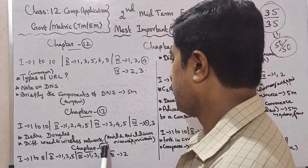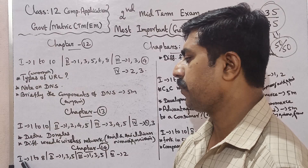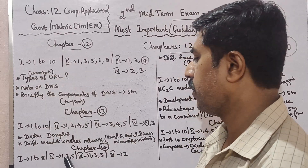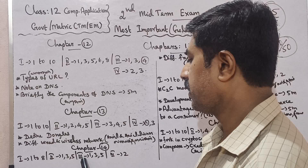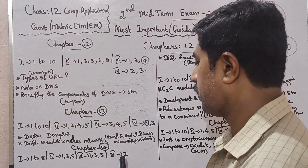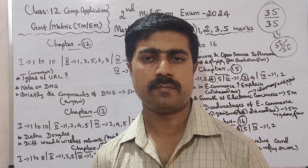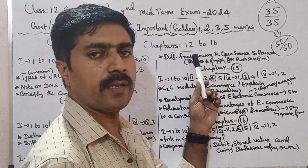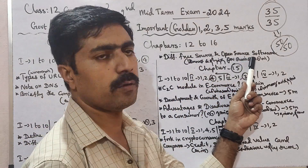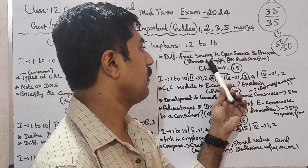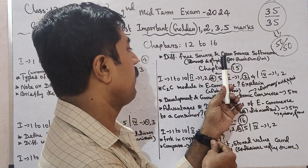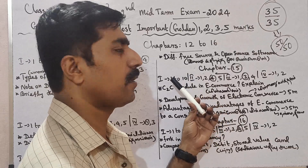In Chapter 14, the mark allocations are: 1 mark, 2 mark, 8 marks of 1-mark questions, 2 mark, 1 mark, 3 mark, 5 mark, 3 mark, 5 mark, 4 mark, and 4 mark inside questions. The key question in Chapter 14 is: differentiate free source and open source software.